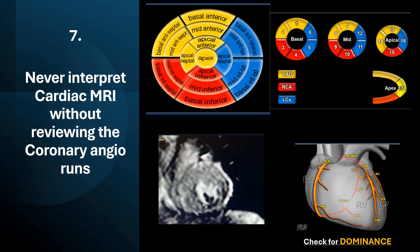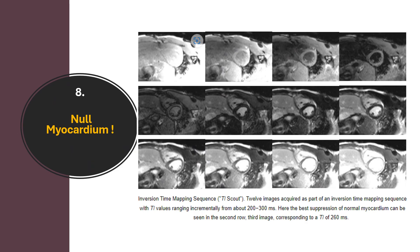The concept of null myocardium: to detect enhancement, the heart must appear extremely black so any enhancement stands out. These are null myocardial images — in this patient the null time is around 260 ms, usually between 200 to 300 ms. If not properly nulled, images like this result — even if enhancement is present, we might miss it. The look-locker sequence is run before late gadolinium enhancement images, between your perfusion and LGE sequences, each time contrast is given.